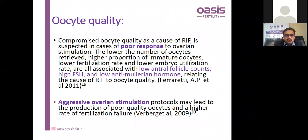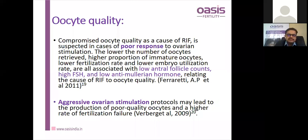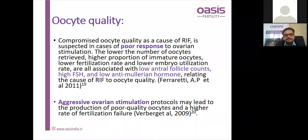Regarding oocyte quality, compromised oocyte quality as a cause of RIF is suspected in cases of poor or suboptimal response to ovarian stimulation. Low antral follicle count, high FSH, and low AMH levels were related to RIF despite optimal embryo quality. Aggressive ovarian stimulation protocols may lead to poor oocyte quality, as shown by Wegener et al. in 2009.